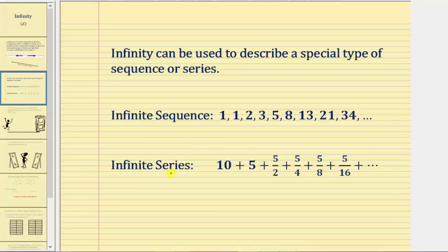For a series, which is a sum of a sequence, an infinite series would be the sum of an infinite sequence. Notice how on the far right we have plus dot dot dot, which means we're summing an endless or limitless number of terms, and therefore we call this an infinite series.